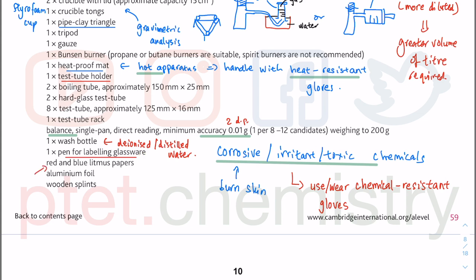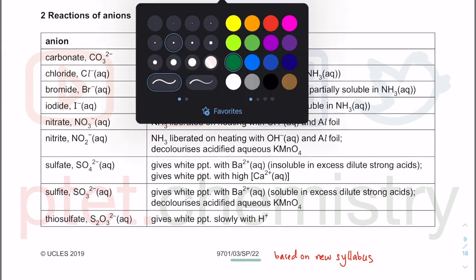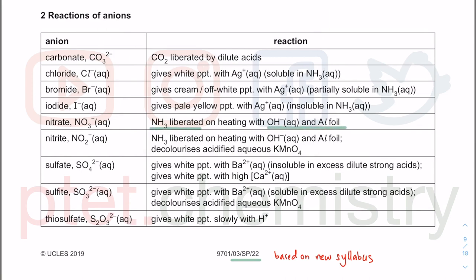Red litmus turning blue is the test for alkaline conditions (pH > 7). Blue litmus turning red is the test for acid (pH < 7). Aluminium foil is needed to test for nitrate ions (NO₃⁻): with OH⁻ and aluminium foil, NH₃ is liberated. The aluminium foil is what distinguishes the nitrate test — without it, you don't get the NH₃, so the aluminium foil confirms NO₃⁻.